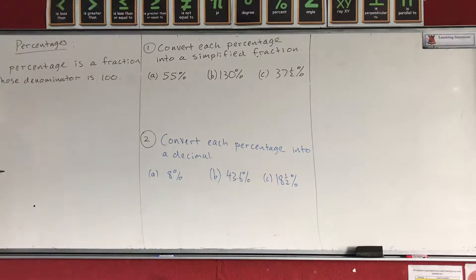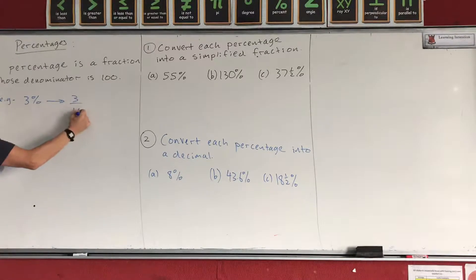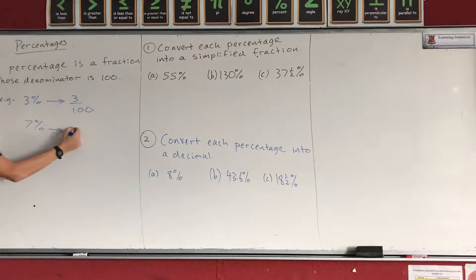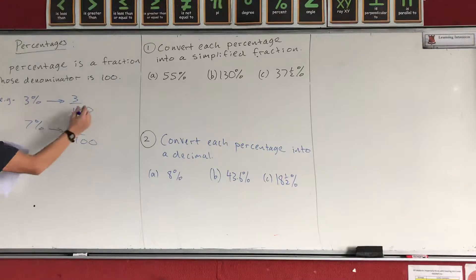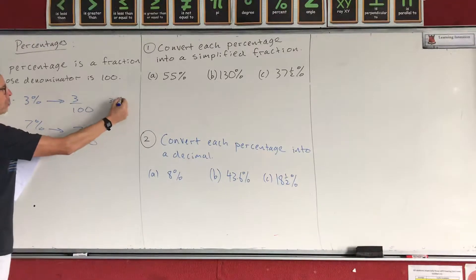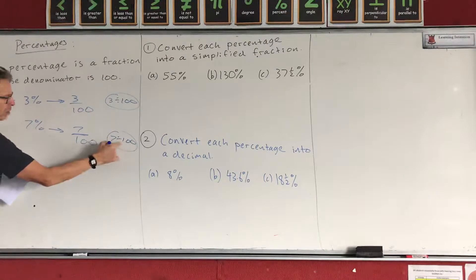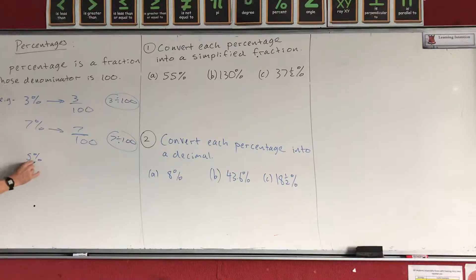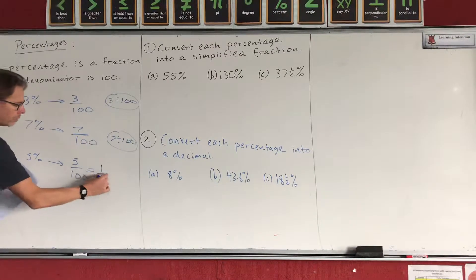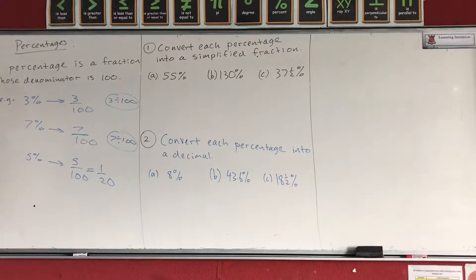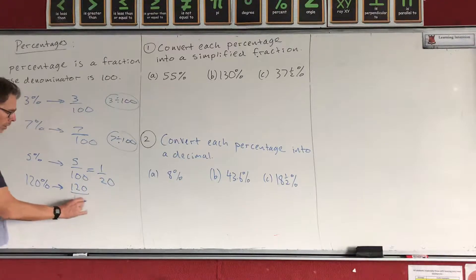A percentage is a fraction whose denominator is 100. Copy that down into your books — you can pause the video. For example, 3% means 3 over 100, and 7% means 7 over 100. That also means 3 divided by 100 and 7 divided by 100, because the fraction line means division. Some percentages can be simplified — 5 over 100 simplifies to 1 over 20. You can even have percentages bigger than 100: 120% means 120 over 100.